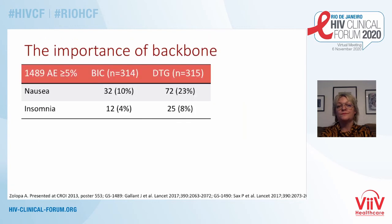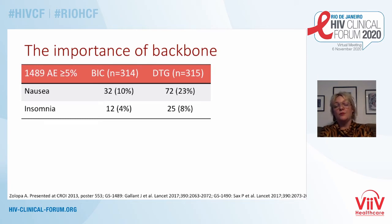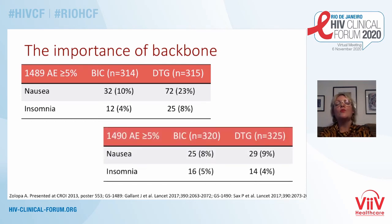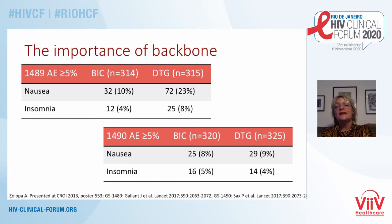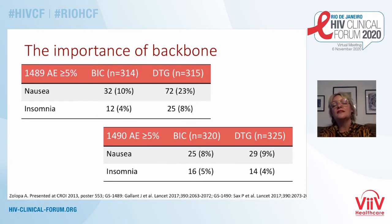Looking at studies 1489 and 1490 — the Gilead registrational studies for bictegravir. Study 1489 compared BIC-FTC-TAF with dolutegravir, abacavir and lamivudine. Look at the differences in nausea and insomnia rates — both more common in the dolutegravir arm. You could say dolutegravir is less well-tolerated than BIC-TAF. However, in 1490, an almost identical study but where dolutegravir was also given with a TAF-FTC backbone — a cleaner comparison of the two integrases — those two adverse events are very similar in the two arms. This tells us it was the abacavir in 1489 driving those differences, not the difference in integrases.